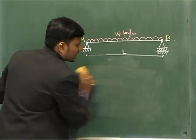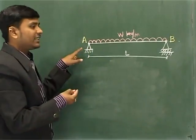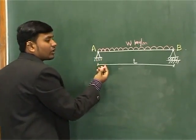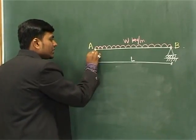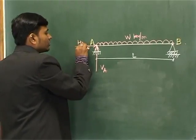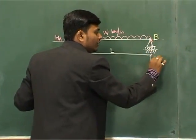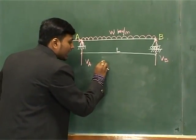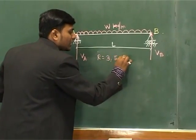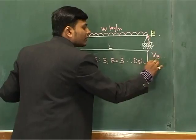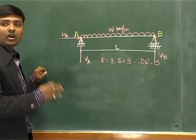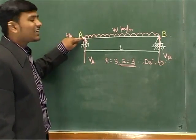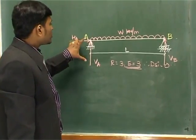To solve this beam, we first calculate the number of reactions. The hinge support at A gives two reactions — one vertical, one horizontal. The roller at B gives only one vertical reaction. So total reactions = 3, equations = 3, therefore DSI = 0. This is a statically determinate structure, solvable using ΣFx=0, ΣFy=0, and ΣM at a fixed point = 0.